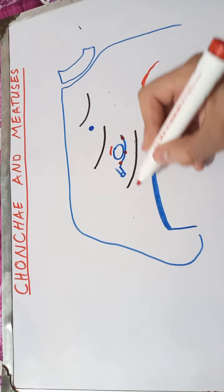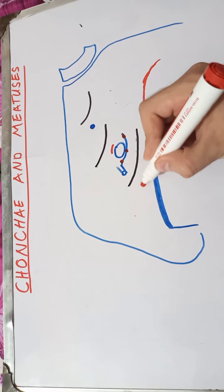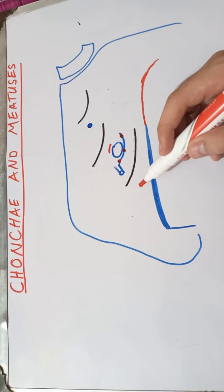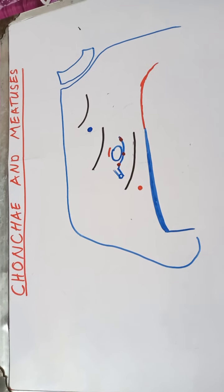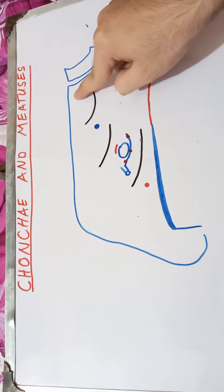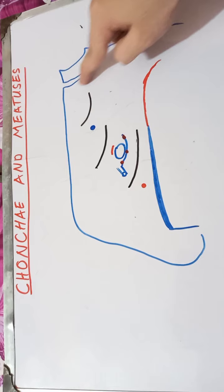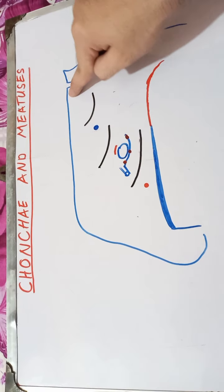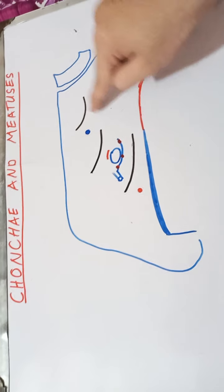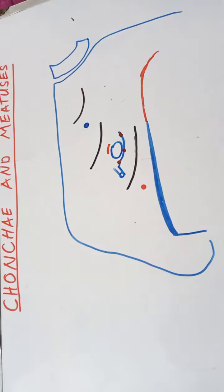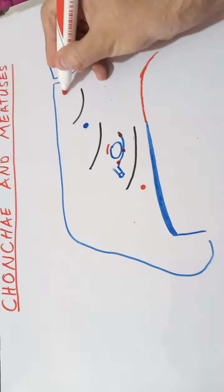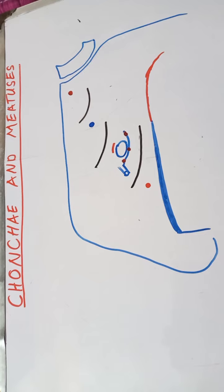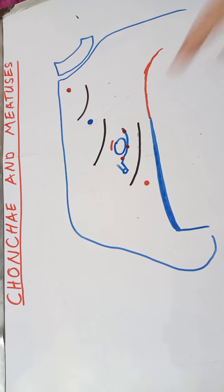In the inferior meatus there is the opening of the nasolacrimal duct, which drains lacrimal fluid into the inferior meatus of the nose. The space between the sphenoid bone and the superior meatus is called the sphenoethmoidal recess, and here is the opening of the sphenoidal air sinus.